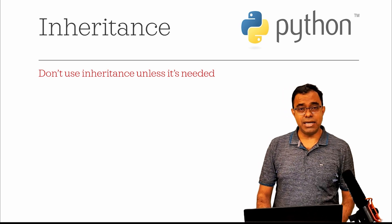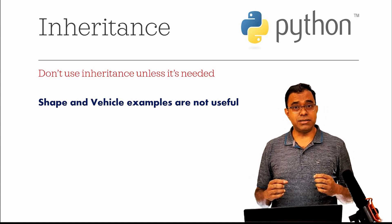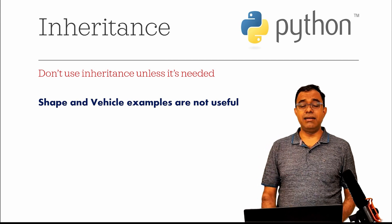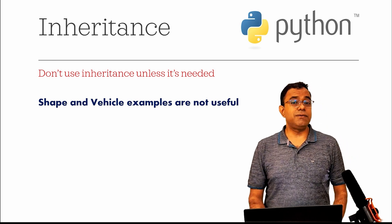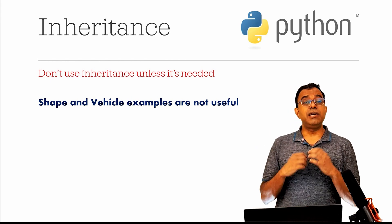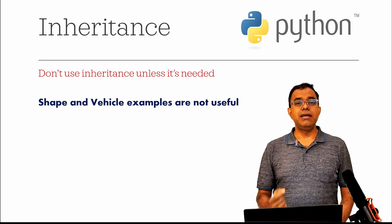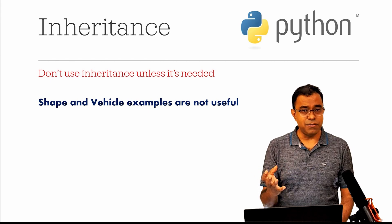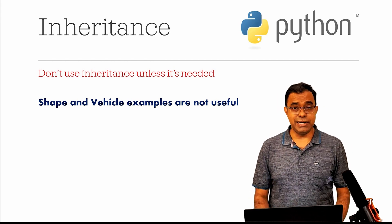Now, if you decide to use inheritance, don't use shape and vehicle examples. I know this might be a bit controversial because every book has these examples — class Shape, class Circle, class Rectangle, class Vehicle, derived classes Car and Bus. If you really want to learn from a software engineering point of view, these examples are totally useless and just confuse people.